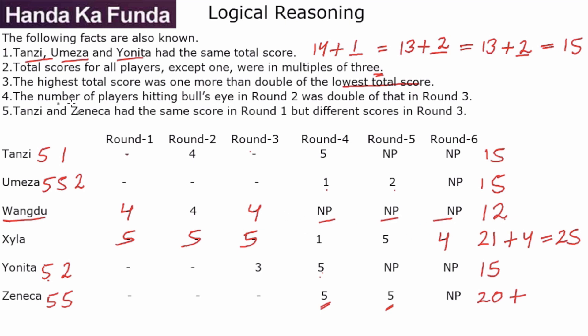The next condition is the number of players hitting bull's eye in round 2 was double of that in round 3. First of all, how many bull's eyes are there? 1, 2, 3, 4, 5, 6, 7, 8, and 9. I need a total of 9 bull's eyes. If I make 1 in round 3, that will mean 2 in round 2, that will mean 6 in round 1. All in round 1 will have to be bull's eyes, which is not possible. We already have Wangdu at 4. So that means this 6-2-1 assumption is incorrect. That means there should be 2 in round 3, 4 in round 2, and 6 are taken, 3 are left. So 3 bull's eyes in round 1. This will be our order of bull's eyes.